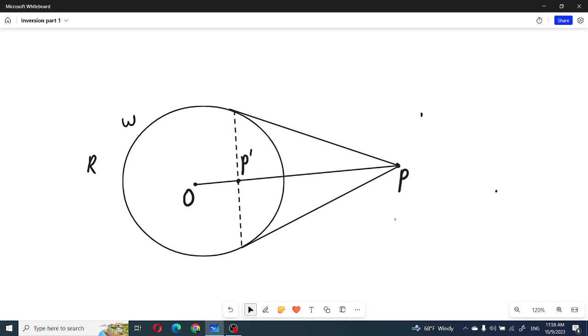In the first one we will define it and some basic properties. The inversion is a transformation of the plane where each point is mapped to the appropriate point P prime, which is on the same line as OP. O must be the center. To define the inversion we need to take the center.